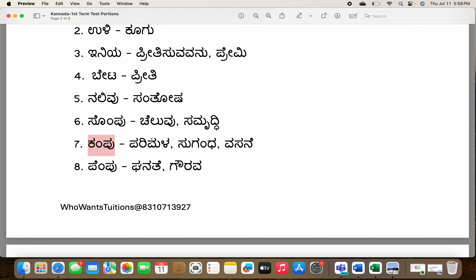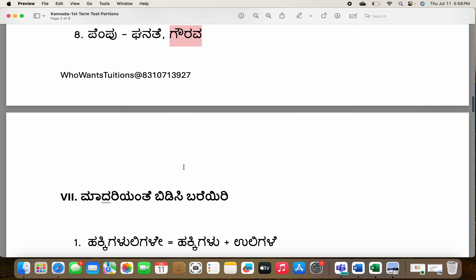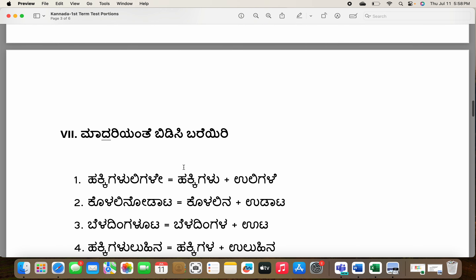Kampu: fragrance. Parimela: suganda. Vasane: fragrance as well — it's vasane, not vasane cha cha cha. Pempu: respect. Ganate: gaurava — respect. These are the word meanings.